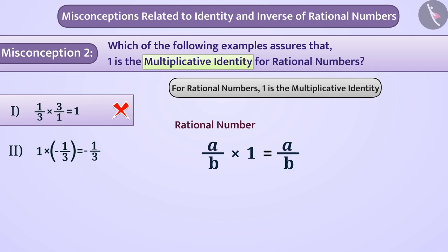Therefore, we can say that the rational number's 1 is a multiplicative identity. Means here, option 2 is the correct answer.